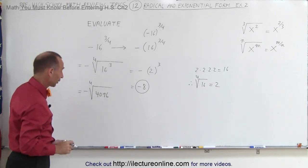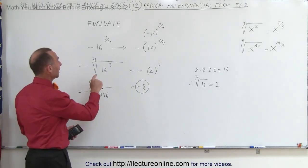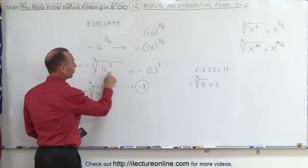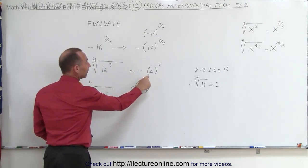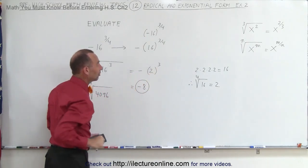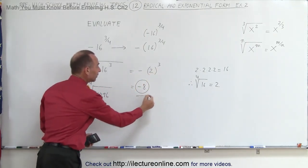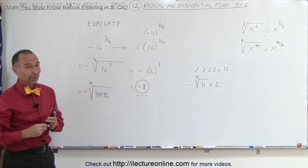No, maybe you could, but it would be a lot of work. So I would recommend that we take the fourth root first, go to this negative 2 to the third power, and then simply take 2 to the third power to get the final answer. That's the best way to do it.